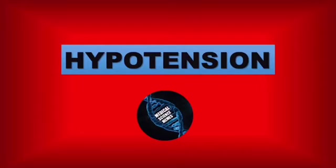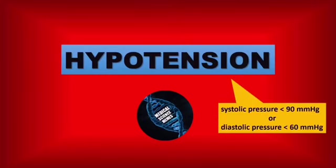Hypotension, or low blood pressure to the point of causing symptoms in patients, is generally characterized by a systolic pressure less than 90 or a diastolic pressure less than 60. Before we start to classify the different types of hypotension, we have to mention that there will be some overlap with the classification for circulatory shock — the state of insufficient blood flow to the tissues of the body as a result of problems with the circulatory system. This is because the different types of hypotension are named according to the specific type of shock.